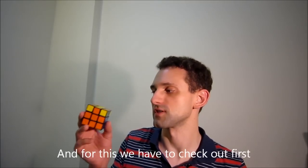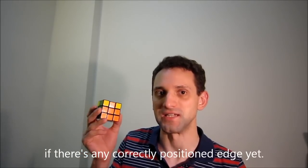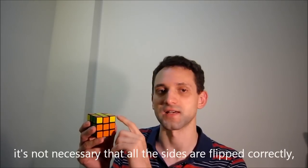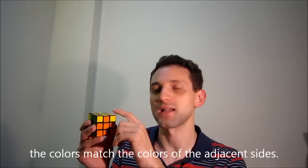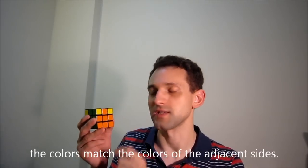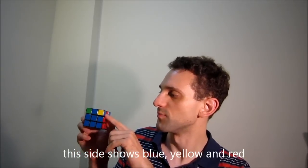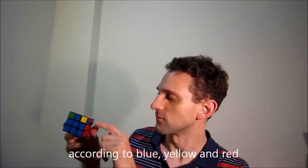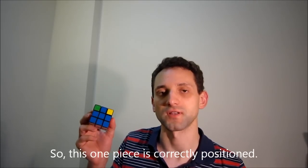And for this we just have to check out if there's any edge which is correctly located yet. Correctly located in this first step means it's not necessarily that all the sides are flipped correctly, but the location should be right, which means the colors are according to the adjacent colors of the sides. For this example, we find that this side has blue, yellow and red according to blue, yellow and red of the sides of the cube. So this one piece is correctly positioned.